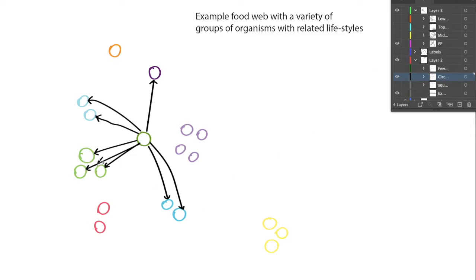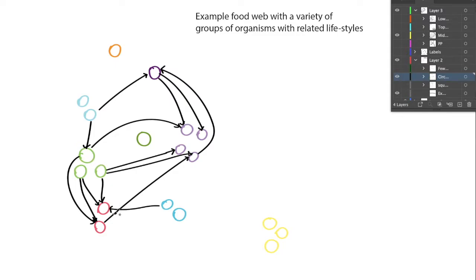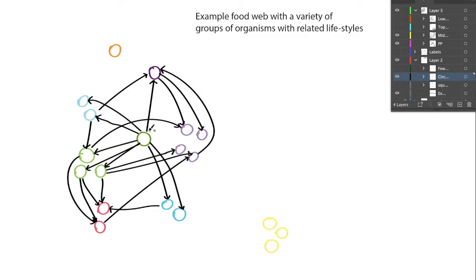These primary consumers are eaten by others, and here I show a whole bunch of arrows among these different organisms. For example, this red one here has three different food choices with the arrows going into it. This one has two food choices and it feeds this one over here, which is eating from two different sources and feeding an organism over here. So it's all supported by this primary productivity.